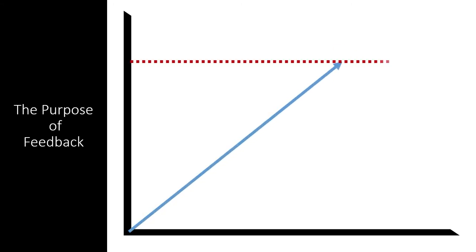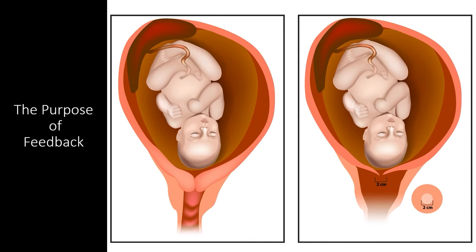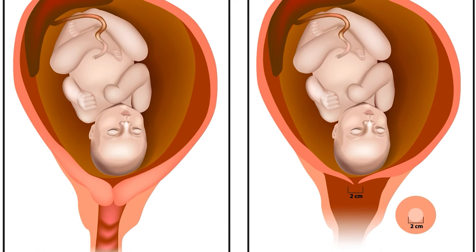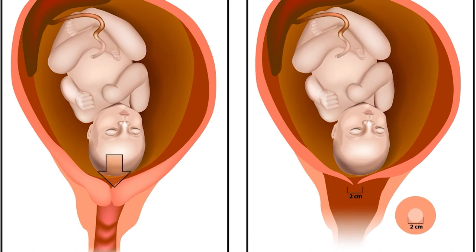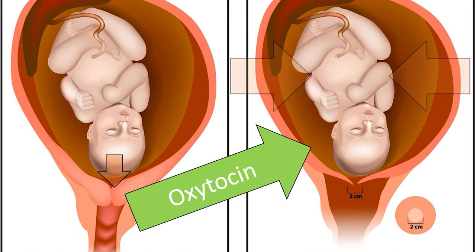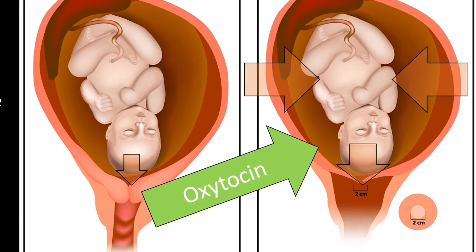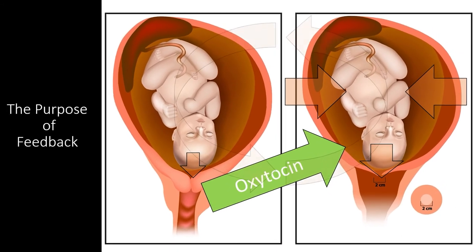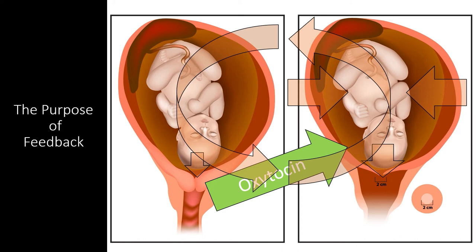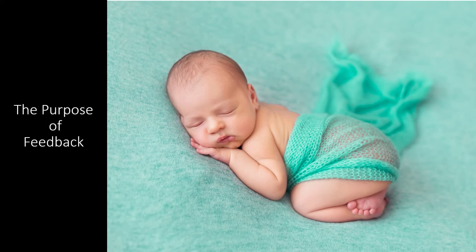By contrast, positive feedback mechanisms are employed when a certain process needs to proceed to a certain threshold so that a greater action can be completed. A great example of this is childbirth. When a baby grows to a certain size in the uterus, its head will start to press on the cervix, releasing the hormone oxytocin into the mother's bloodstream. Oxytocin causes contractions in the uterus, which continue to push the baby's head into the cervix. This is a positive feedback mechanism because the release of oxytocin causes more oxytocin to be released. This process continues to build until the cervix is fully dilated and the contractions are strong enough to push the baby out of the birth canal.